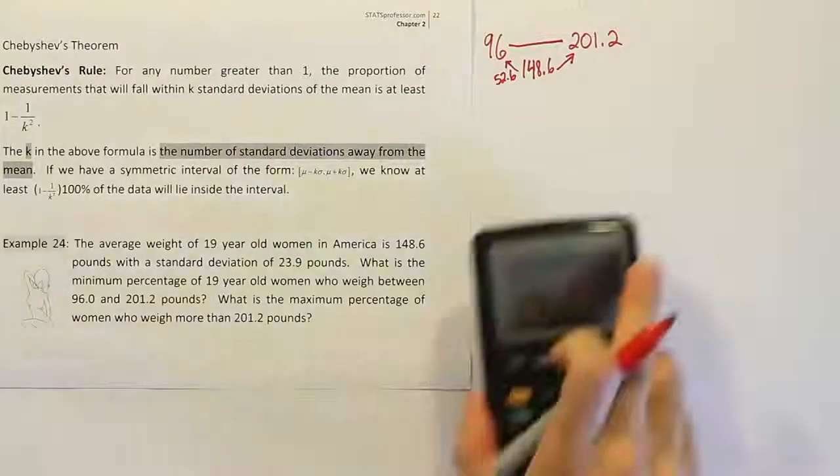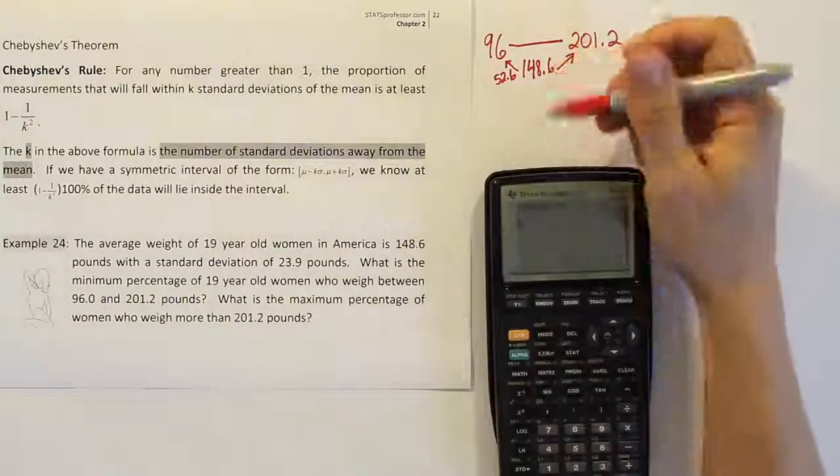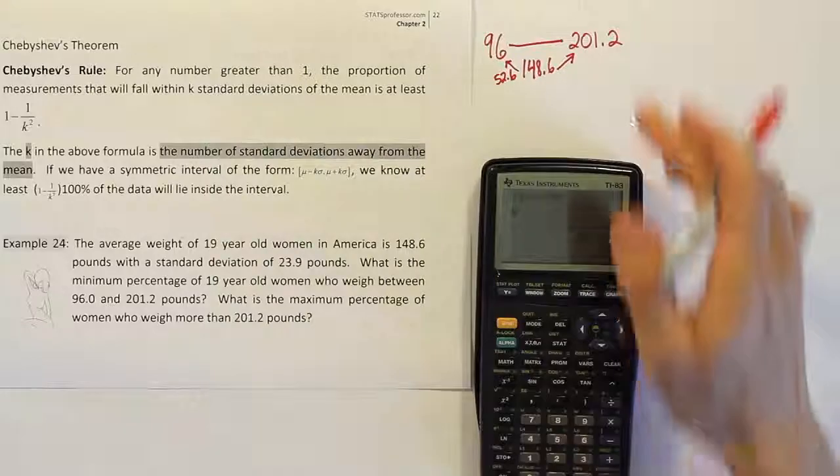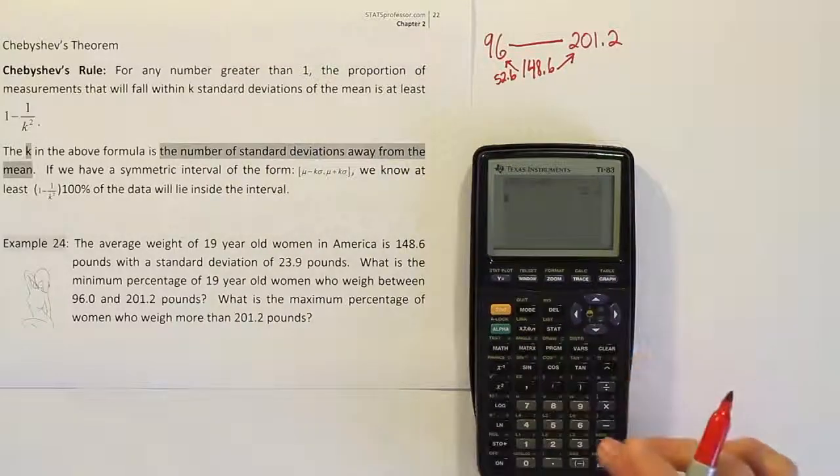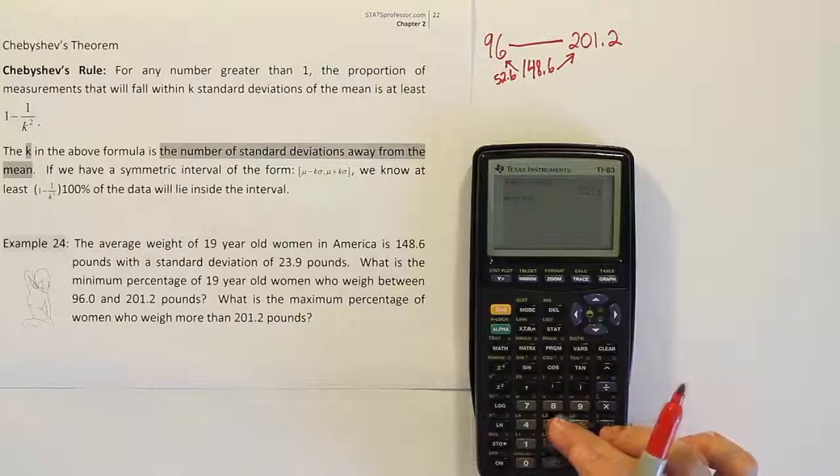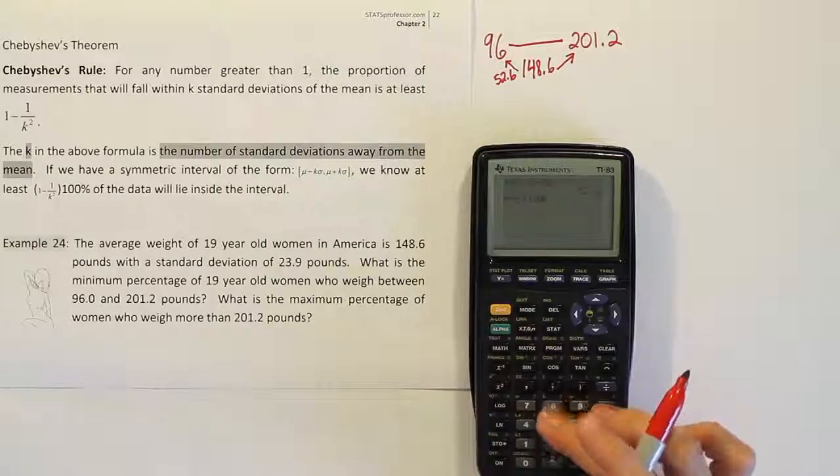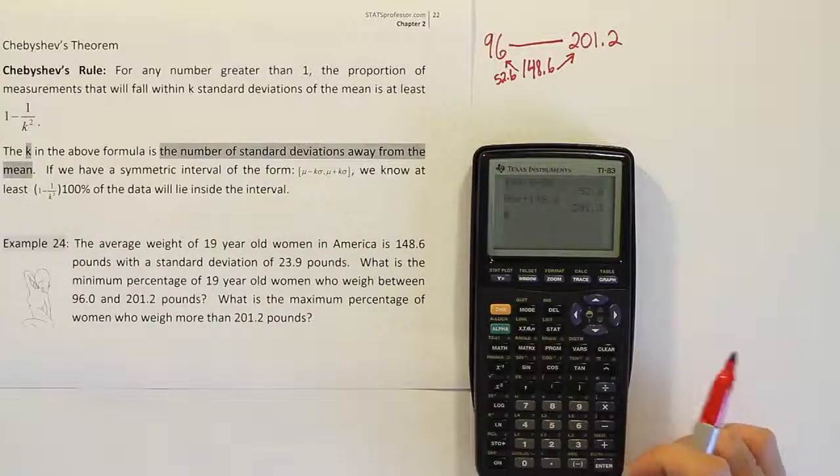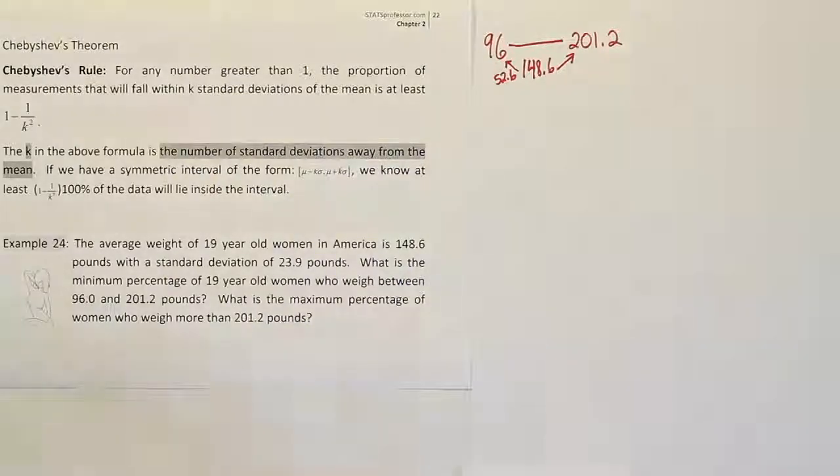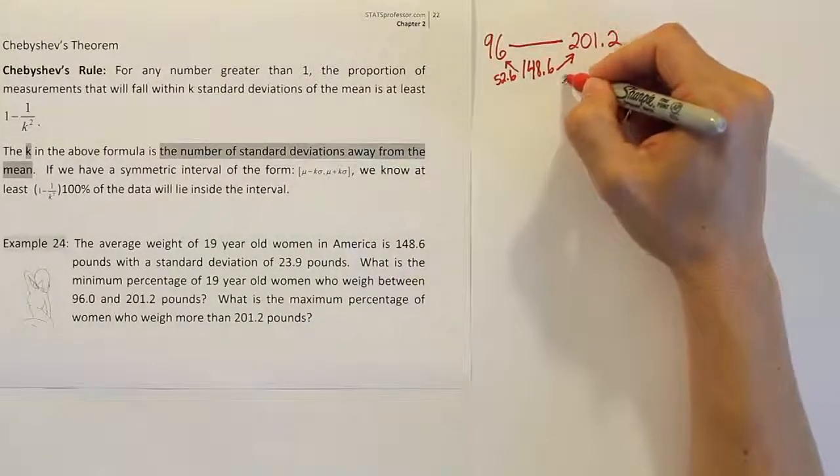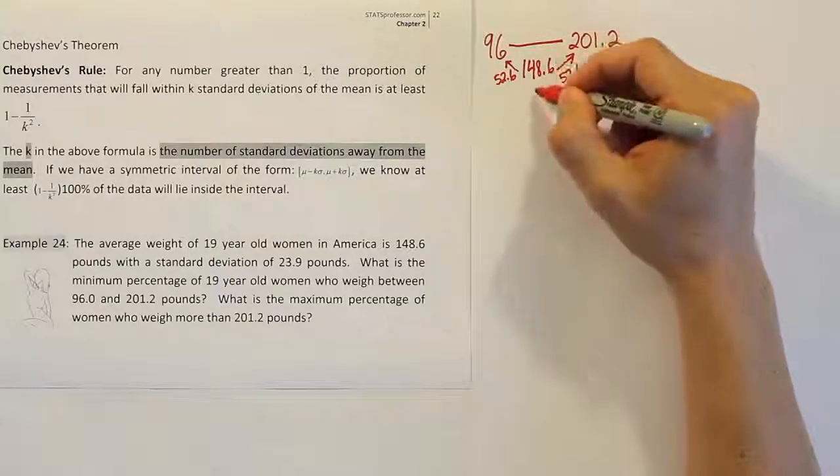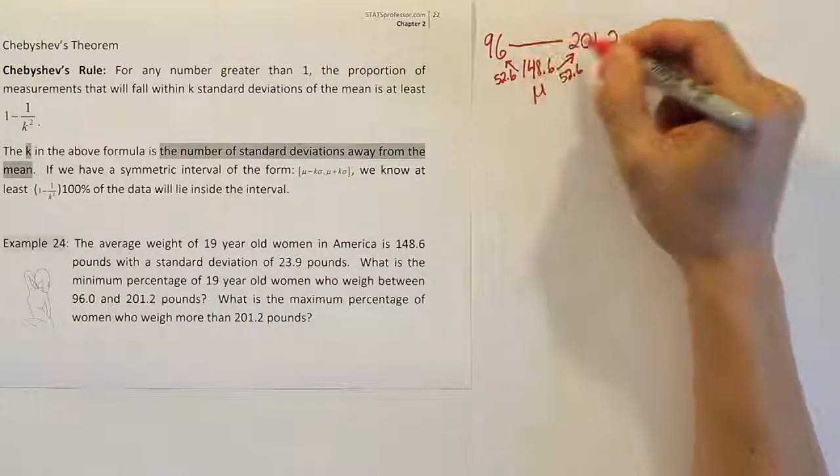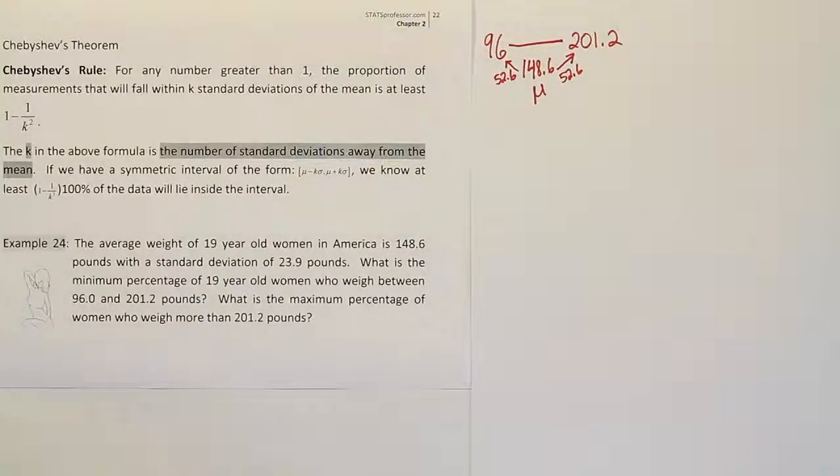The question is, what happens if I add that 52.6 distance to 148.6? Will it give me 201.2? Let's find out. If I add to that the mean 148.6, when I do that, I get 201.2. I get the precise value that's on the right-hand side. And what this shows me is that this number, the mean, is right in the middle of this interval of values they gave me. And that's what I'm looking for in the problem.